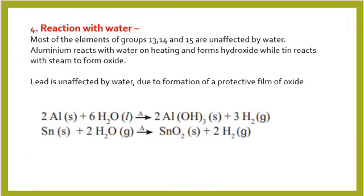Reaction with water. Most of the elements of group 13, 14 and 15 remain unaffected by water. Aluminium reacts with water on heating only, to form its hydroxide and liberate hydrogen gas. Tin reacts only with steam to form its oxide and hydrogen gas. Lead remains unaffected by water due to the formation of a protective oxide film. The equation shows aluminium heated with water giving aluminium hydroxide and hydrogen gas, and tin reacting with steam to give stannic oxide and hydrogen gas.